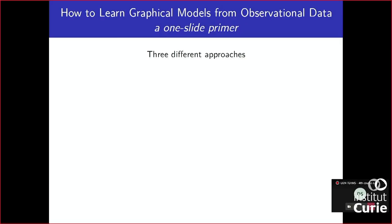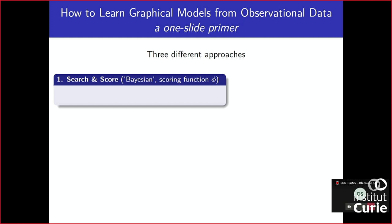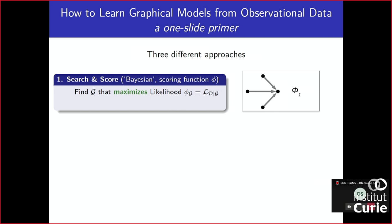Given this introduction on causality, let's review the main classes of methods to learn graphical models from data. There are basically three different approaches. The first is called search-and-score methods, typically applied to Bayesian graphs. If you assume a fully oriented Bayesian graph, you can define a score — the likelihood — for each possible network. Given the data and an assumed graph with four points, you estimate the score. If you swap the direction of an edge, you get a new score, and the idea is to explore all possible networks and find the one with the highest score.